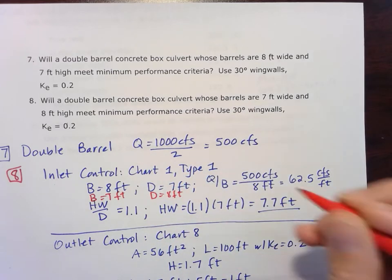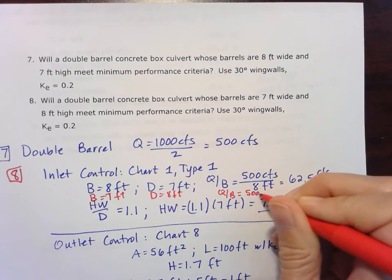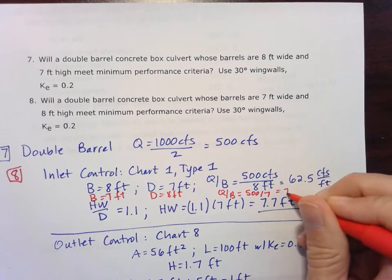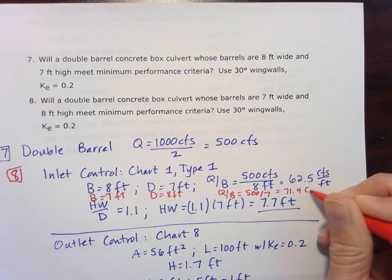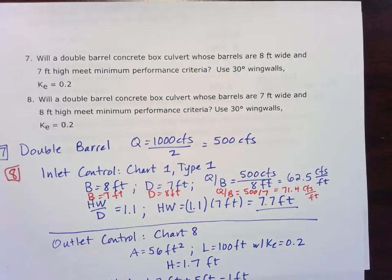Okay, so now our Q over B becomes 500 over 7, which isn't that much different. It's like around 71.4 cubic feet per second per foot. So it does change things a little bit.